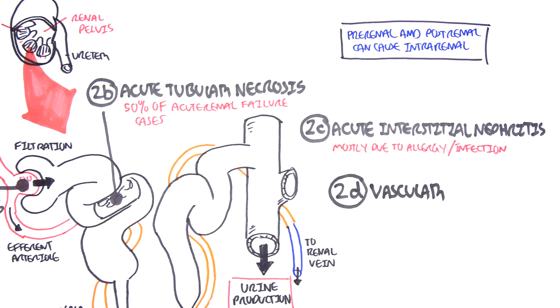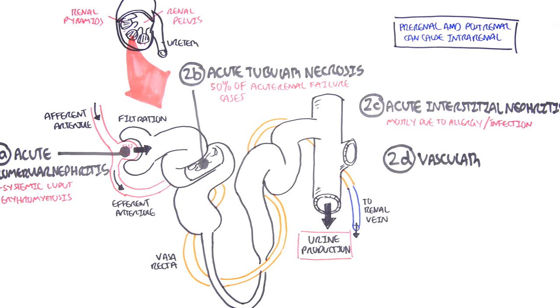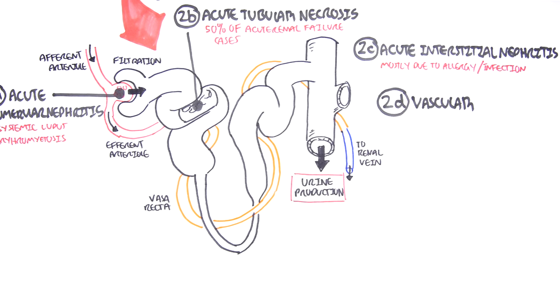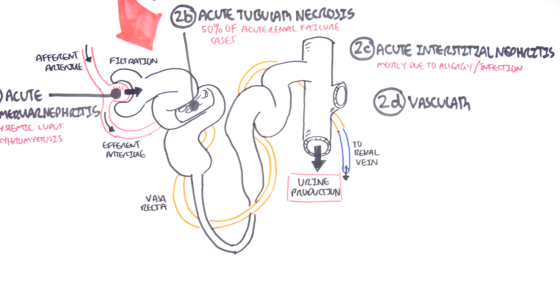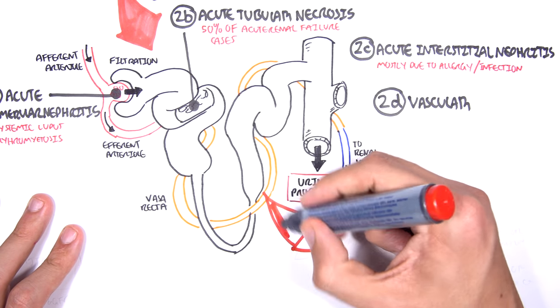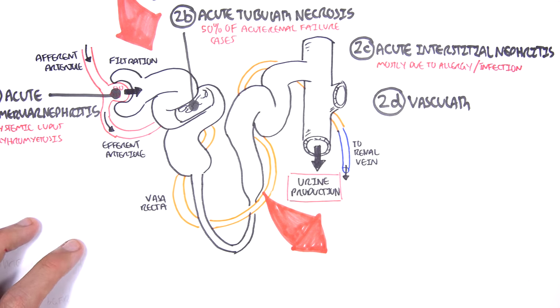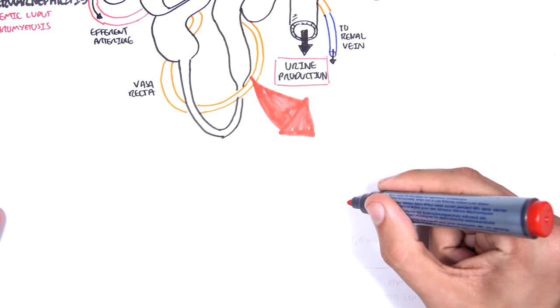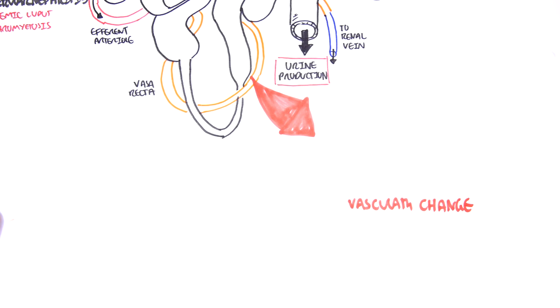So we know that acute renal failure is characterized mainly by a decrease in the glomerular filtration rate or GFR. So why do we have this characteristic of a decrease in GFR? Well, it can be basically caused by two main changes.